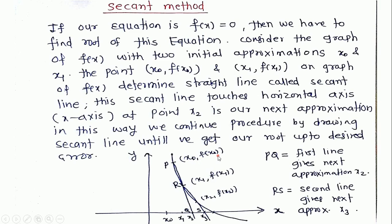We are taking two initial guesses in this method, and our second initial guess is x1. This point has value x1 comma f of x1. In this method we are drawing the secant line which touches the points P and Q, and then it touches the x-axis at this point x2. This is our next approximation to the root.